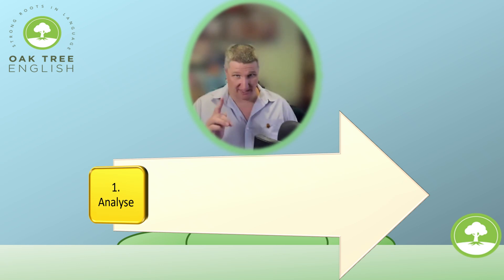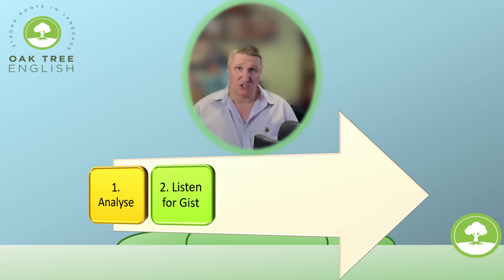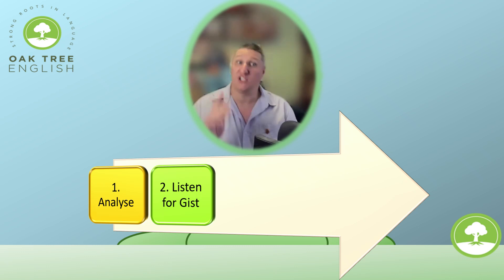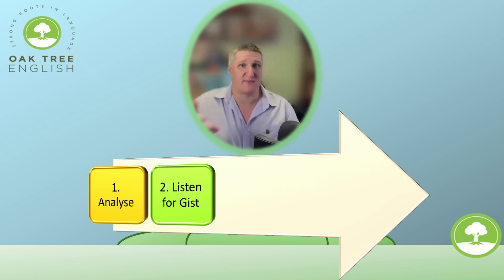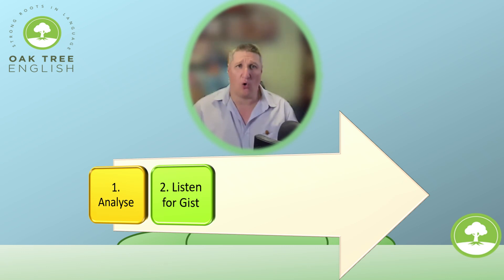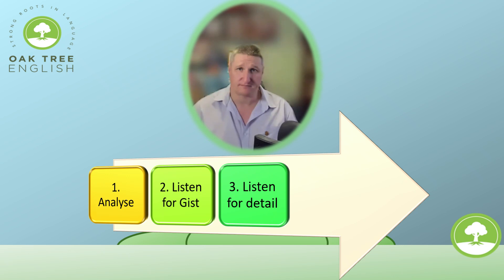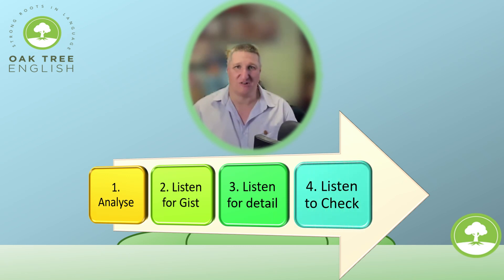Then you will hear the recording for the first time. This time, you should only answer the gist question, which will usually ask about the person speaking or the people they are speaking to. The second time you hear it, you should be able to answer all the questions. But don't worry if you can't, because there is a third chance to check your answers.